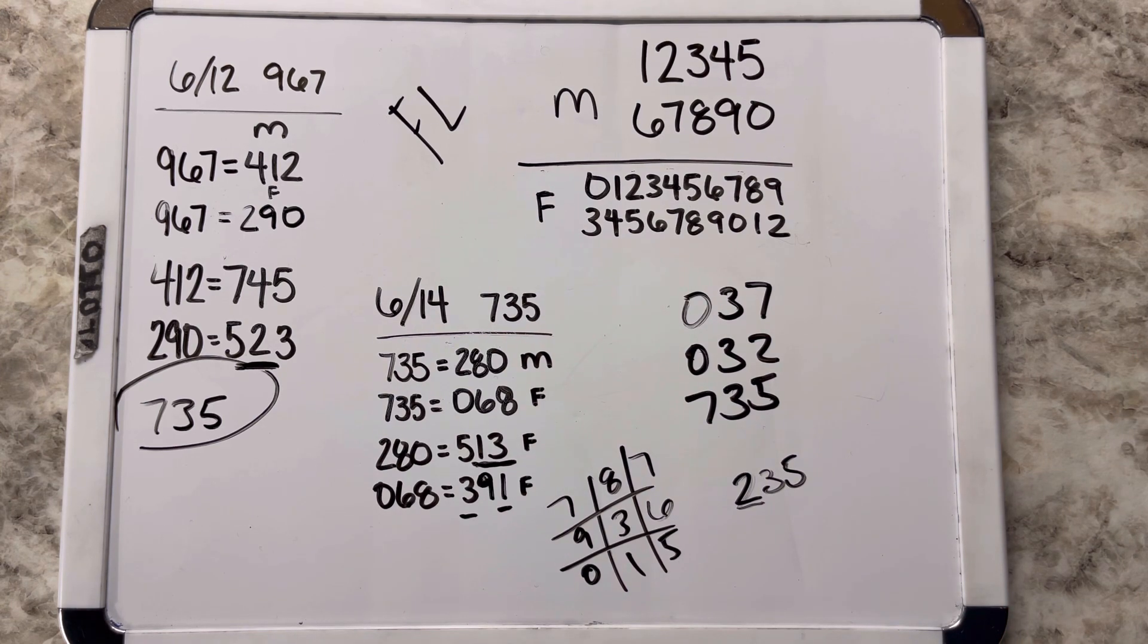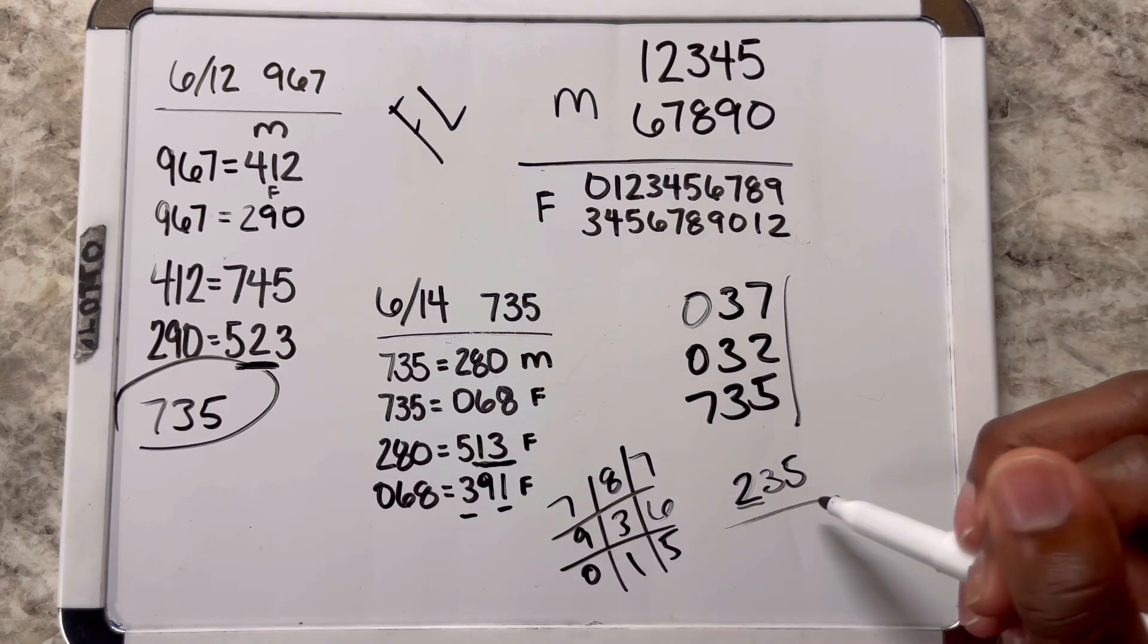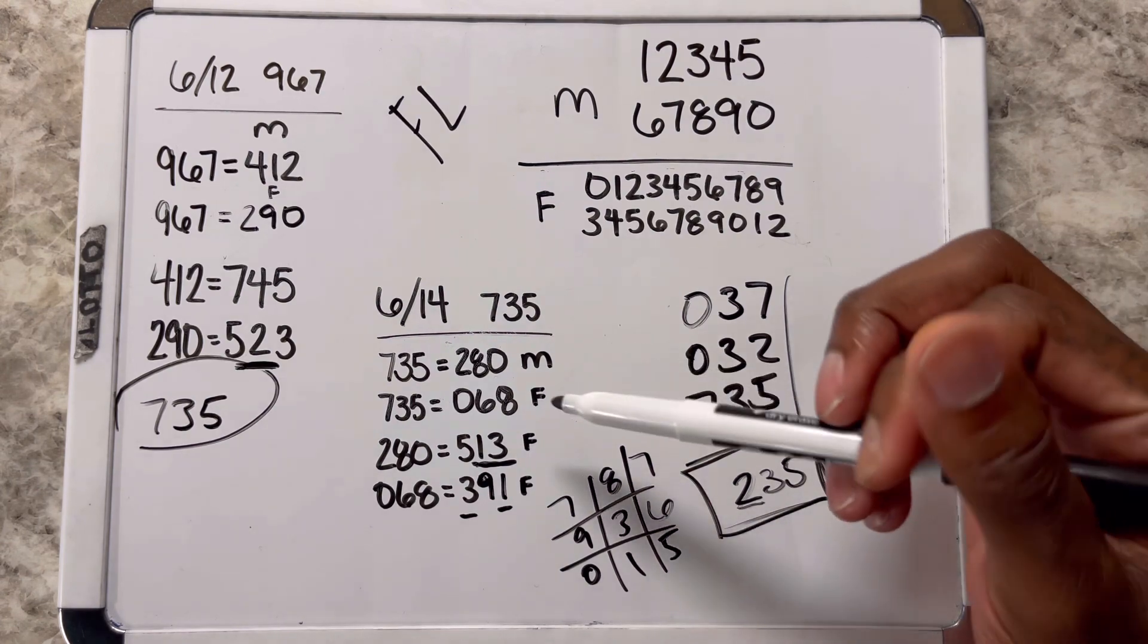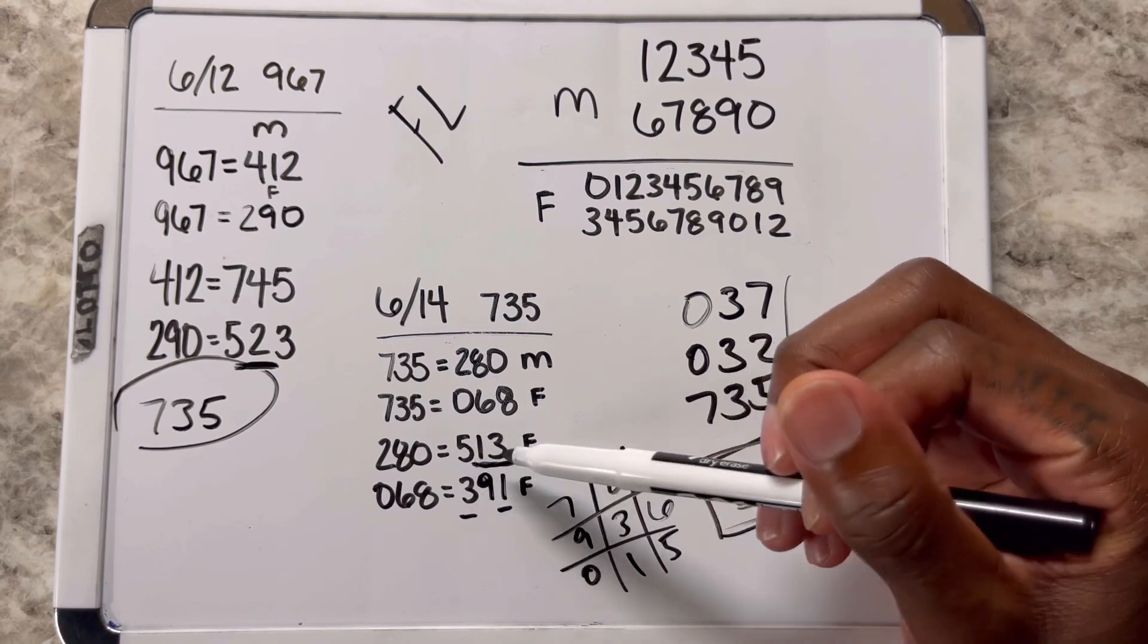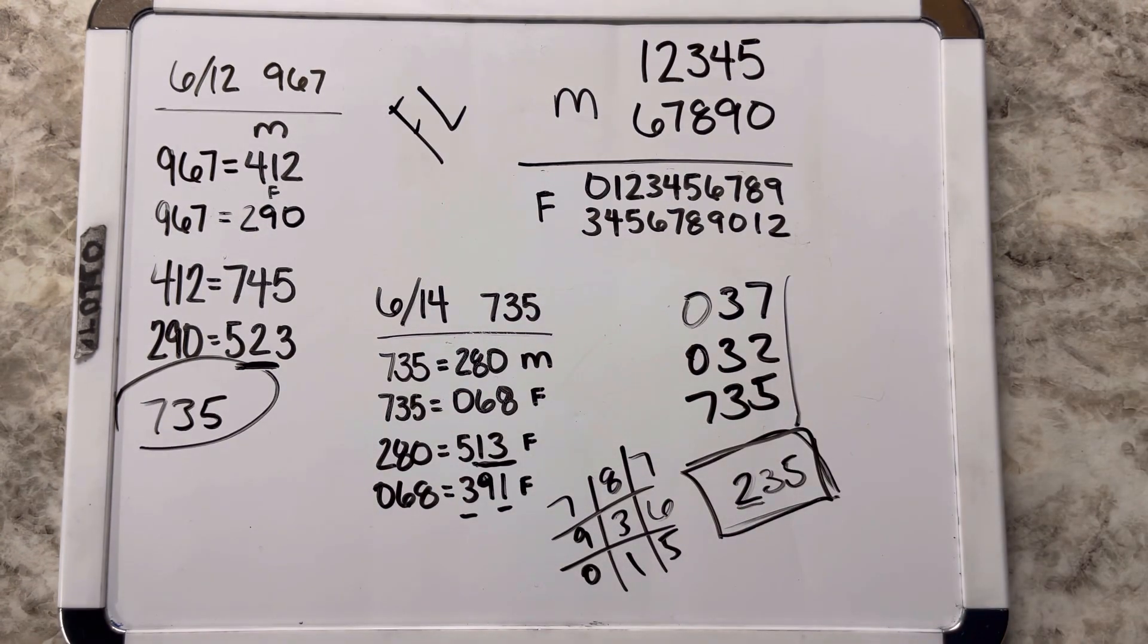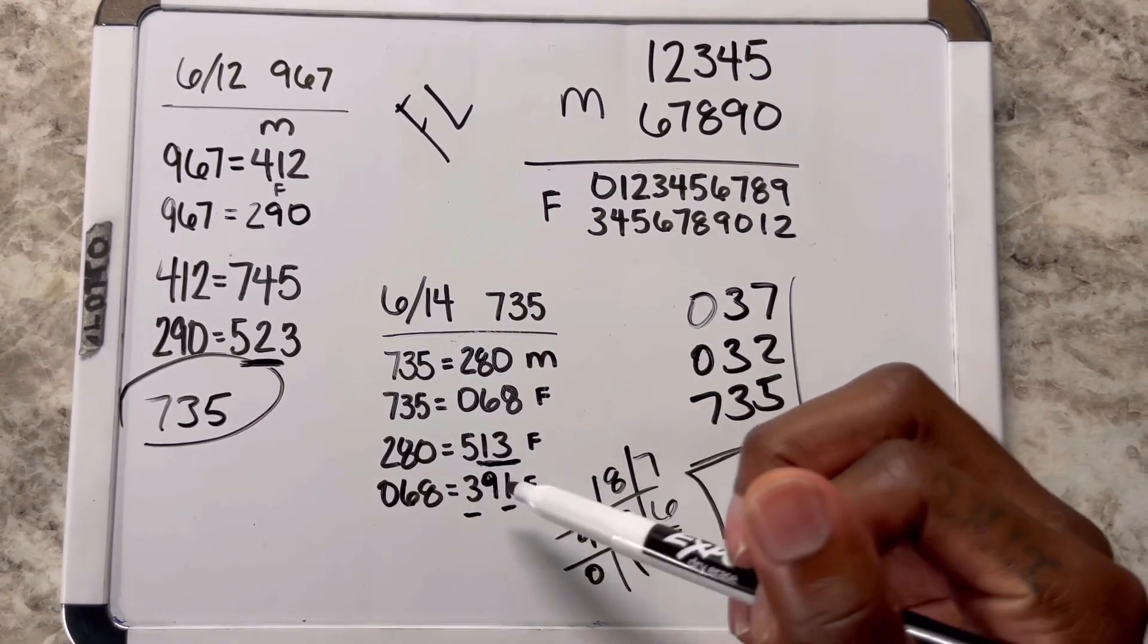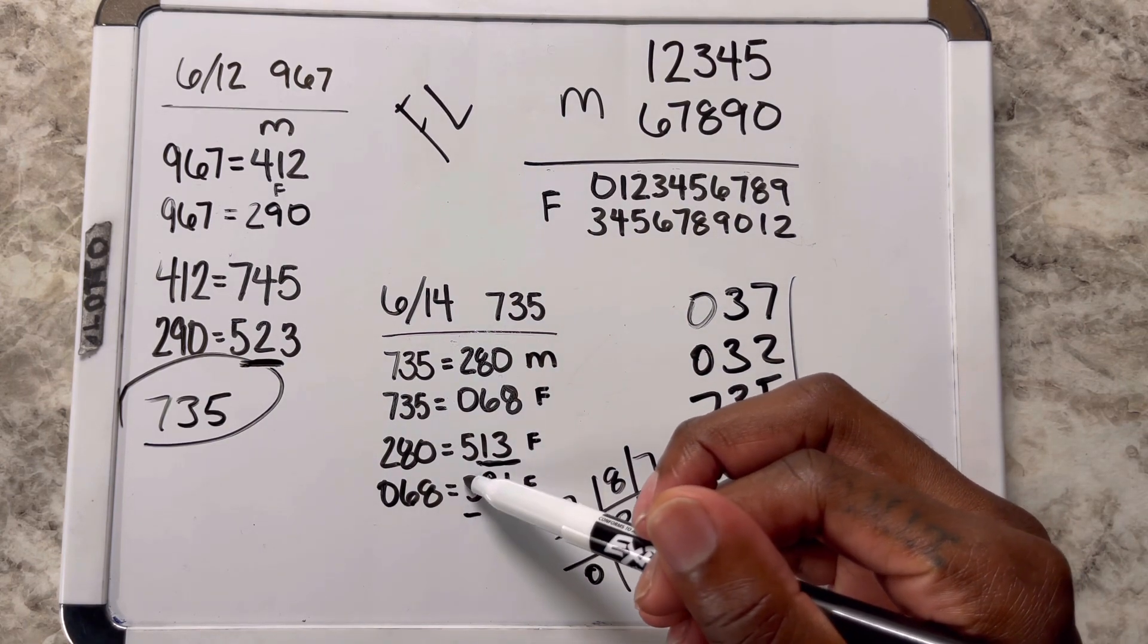I want y'all to be on the lookout for that number right there if you're in Florida, at 235. You can run that as 513. Pay attention to the numbers, pay attention to what's coming out in y'all state. That 391 or 396 because y'all just had 381 on the 13th and y'all had 118. You can run that as a 891.